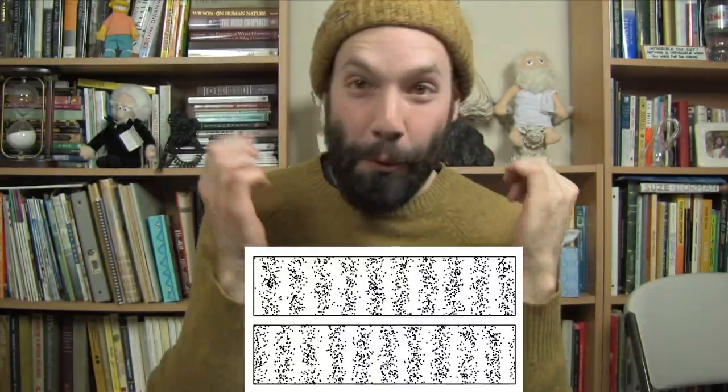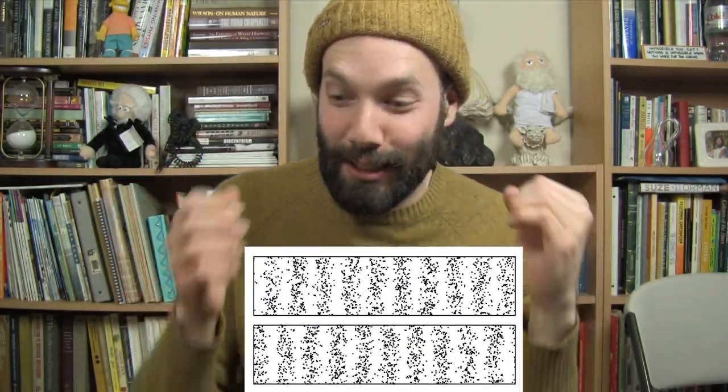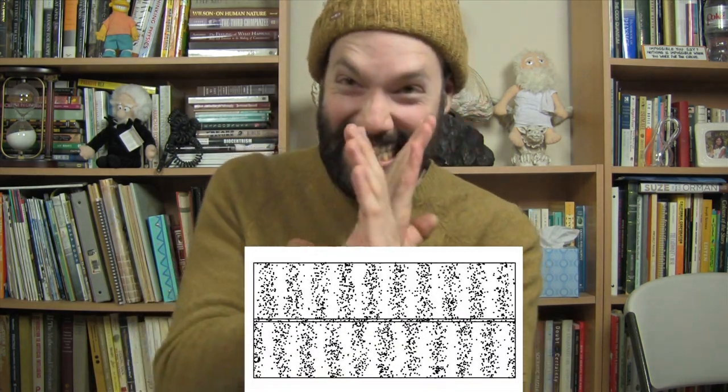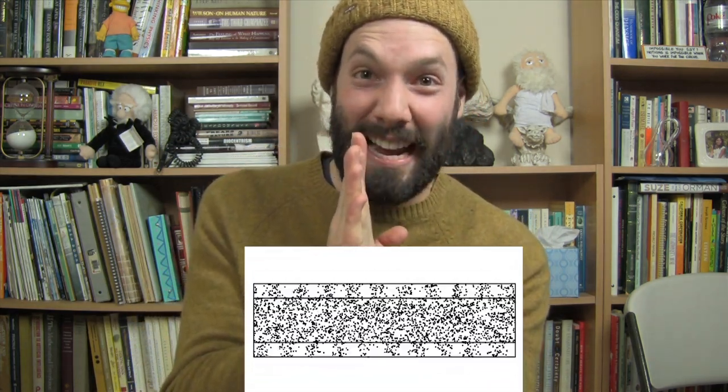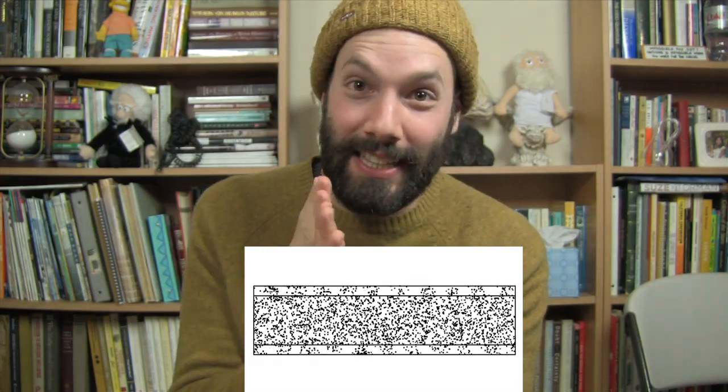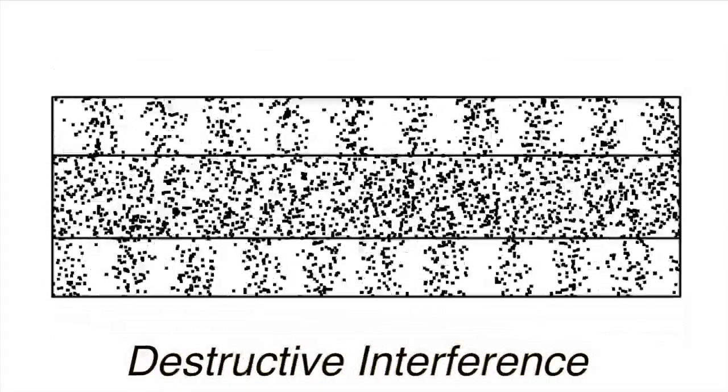But what if the headphone made the air molecules not vibrate back and forth, but forth and back? Then every wave from the synthesizer would make the air molecules vibrate back and forth, while every wave from the headphones would make the air molecules vibrate forth and back. The waves would be perfectly out of sync. The pushes would cancel each other out and the air wouldn't vibrate at all — there would be no sound. This is an example of destructive interference.